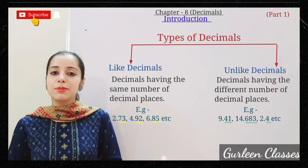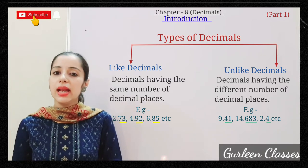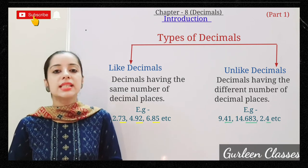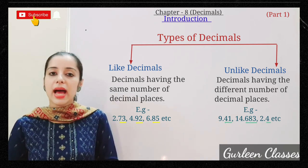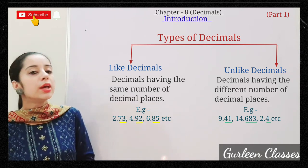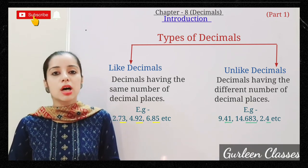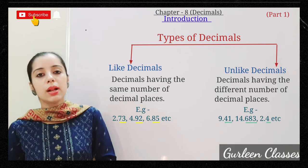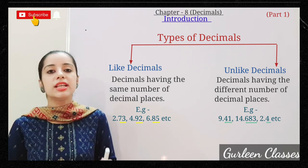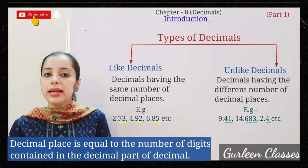Next topic: Types of Decimals. There are two types — like decimals and unlike decimals. Decimals having the same number of decimal places are called like decimals. For example: 2.73, 4.92, and 6.85 are like decimals because after the decimal point there are two decimal places in each. The decimal place refers to the number of digits in the decimal part of a decimal number.